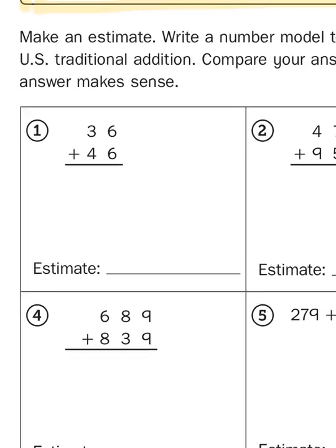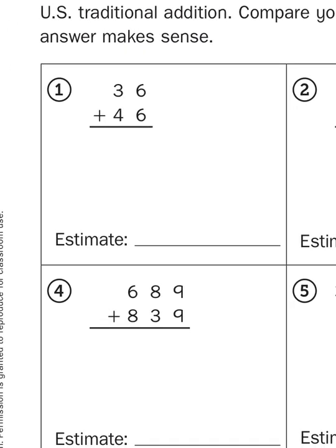So the first thing I'm going to do is take a look at my first problem, 36 plus 46. Now, I want to create an estimate, like it says down here. But for me, it makes more sense to write the estimated problem alongside the actual algorithm. So what I need to do is round 36 and 46 to the nearest 10.